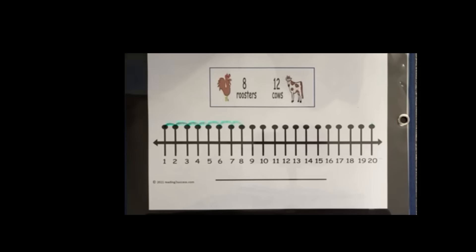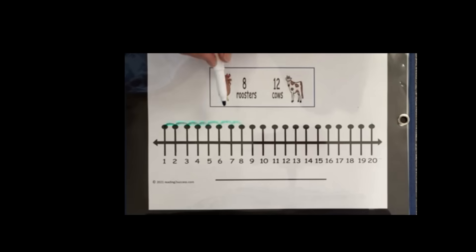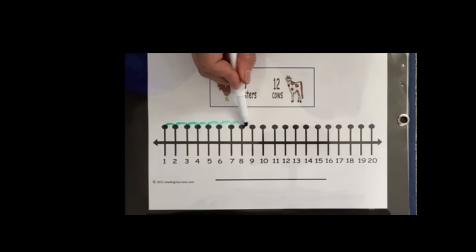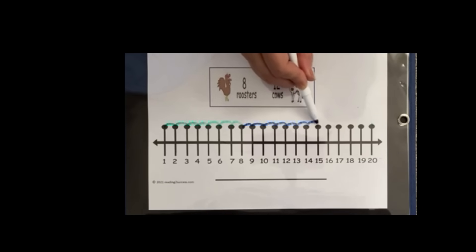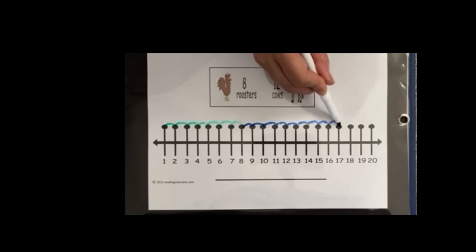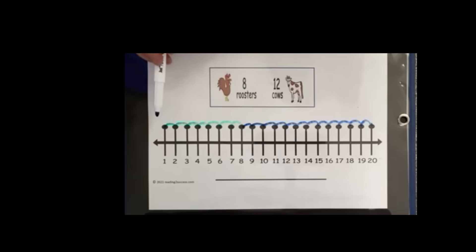Now with the 8 roosters, we want to add 12 cows to see how many in all. So we're going to start here. And this was 8, but now we're just going to count 12: 1, 2, 3, 4, 5, 6, 7, 8, 9, 10, 11, 12. The green represents the 8 roosters and the blue represents the 12 cows.